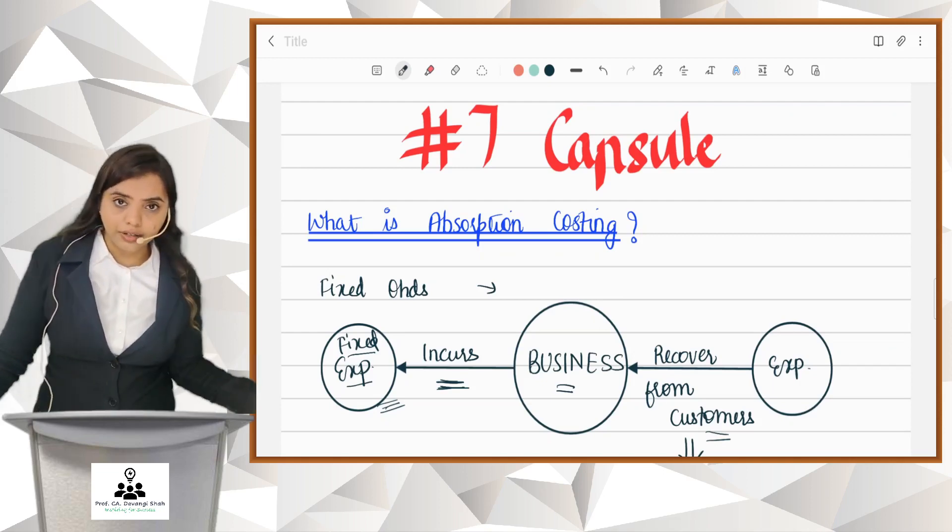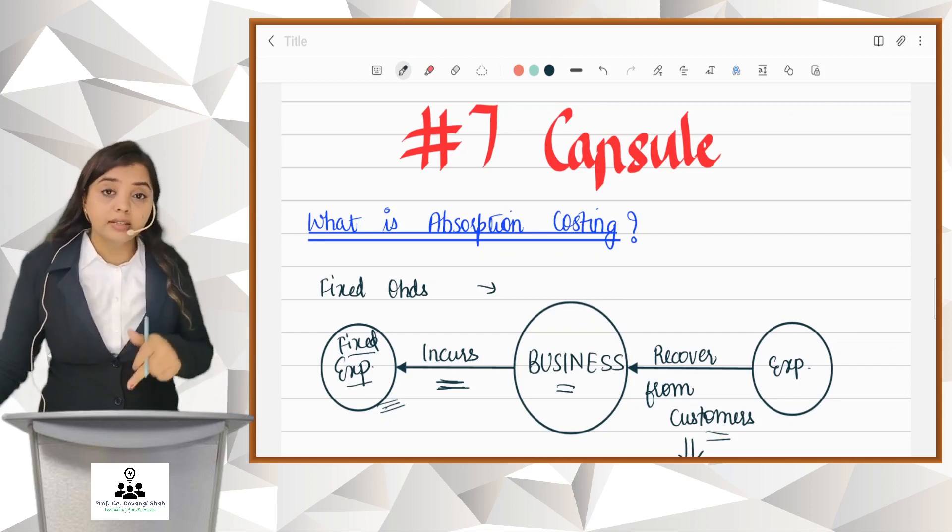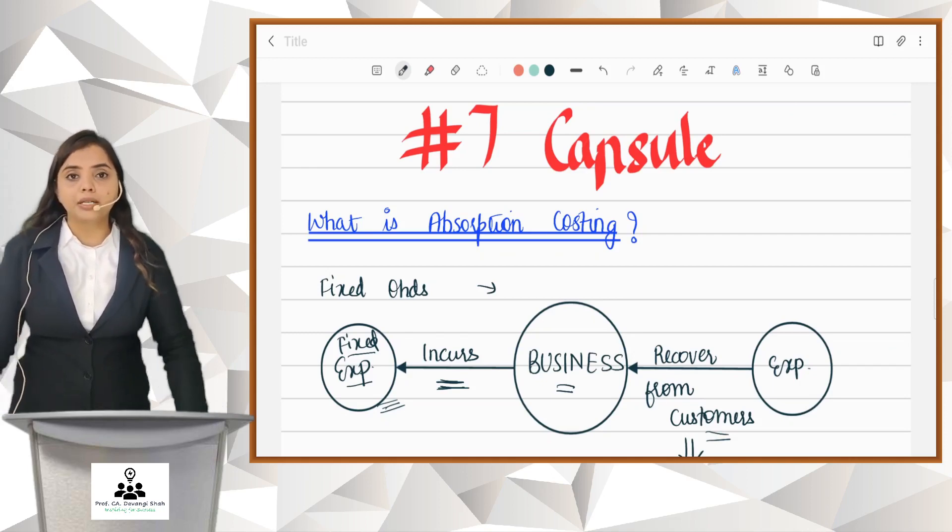If you have not downloaded my app to get the soft copy of this capsules, download it right away. Let's begin with absorption costing capsules, that is capsule number seven.